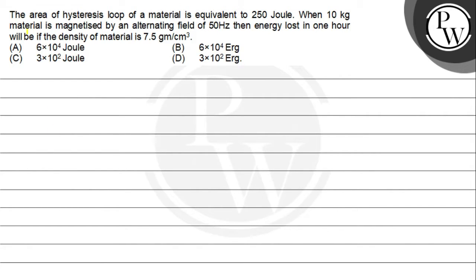Hello children, let us see the question. The question says: the area of a hysteresis loop of a material is equivalent to 250 joules. When 10 kg material is magnetized by an alternating field of 50 hertz, then energy lost in one hour will be - if the density of the material is 7.5 gram per centimeter cube.